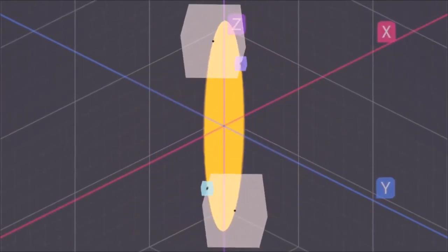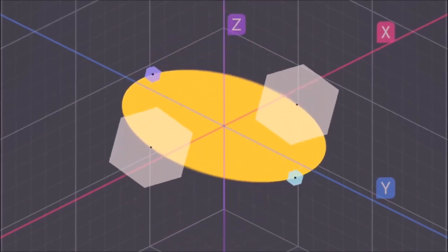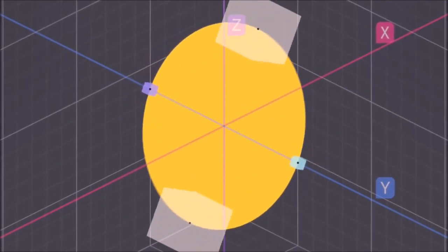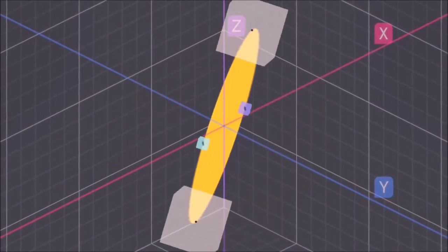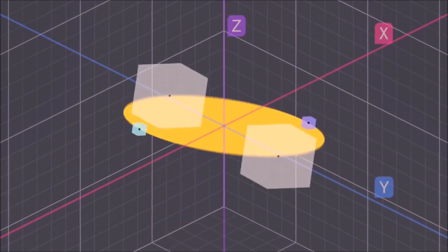This will only happen if an external force is applied to the rotating object, producing a torque that varies the angular momentum.